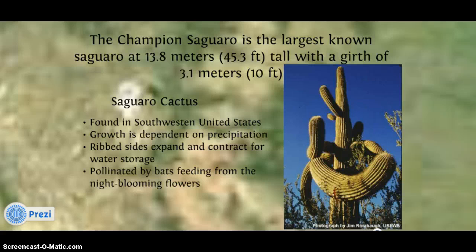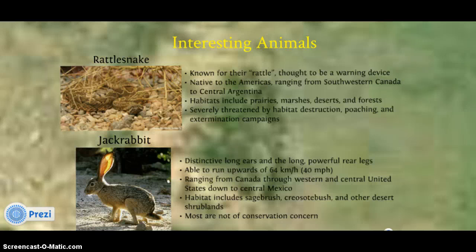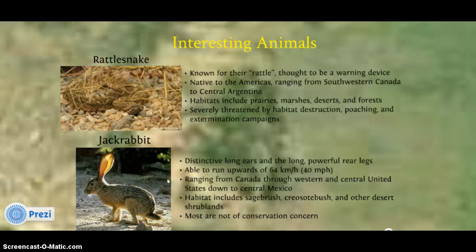Did you know? The champion saguaro is the largest known saguaro at 13.8 meters tall with a girth of 3.1 meters, found in the southwestern United States in the desert region. Some interesting animals: the rattlesnake is known for the rattle at the end of its tail, thought of as a warning device, and is found in rangeland habitats including prairies, deserts, and open forests. The jackrabbit has distinctive long ears and powerful rear legs that allow it to run up to 64 kilometers per hour (40 miles per hour), ranging from Canada down through central Mexico.